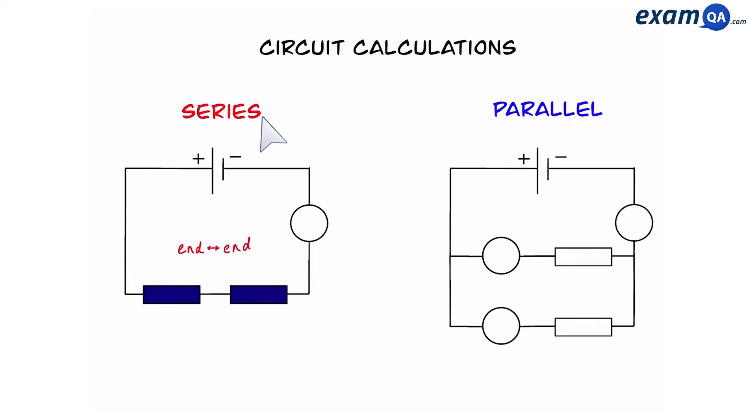In a series circuit the components or the resistors here are end-to-end, whereas in a parallel circuit they are side-to-side.